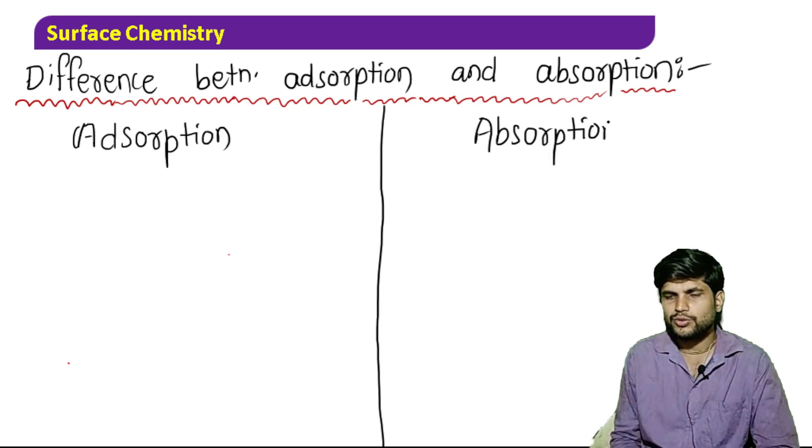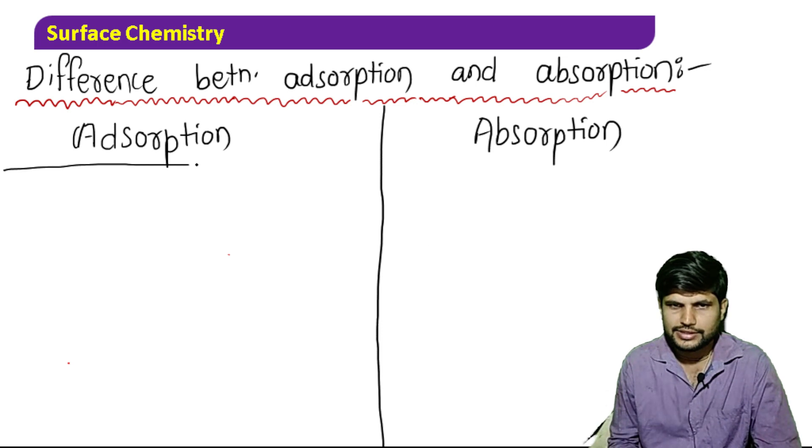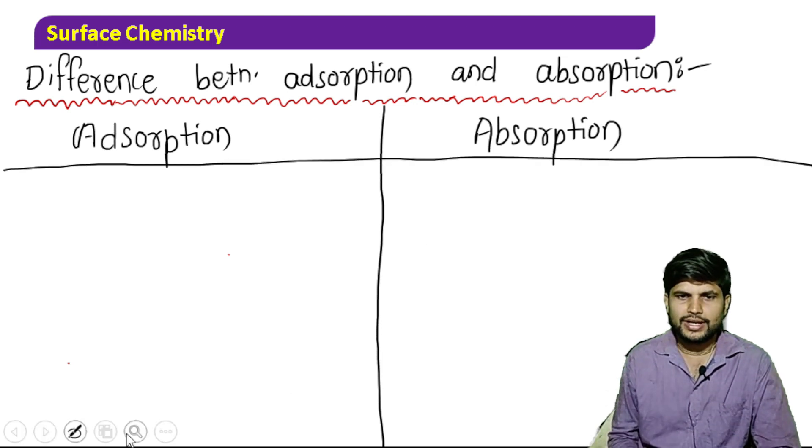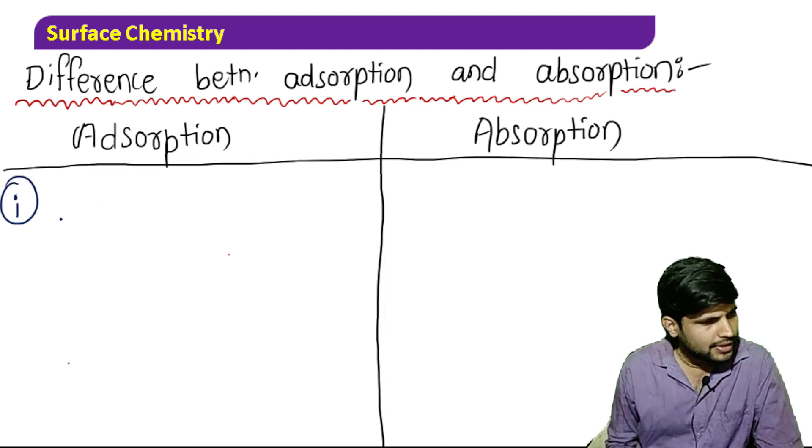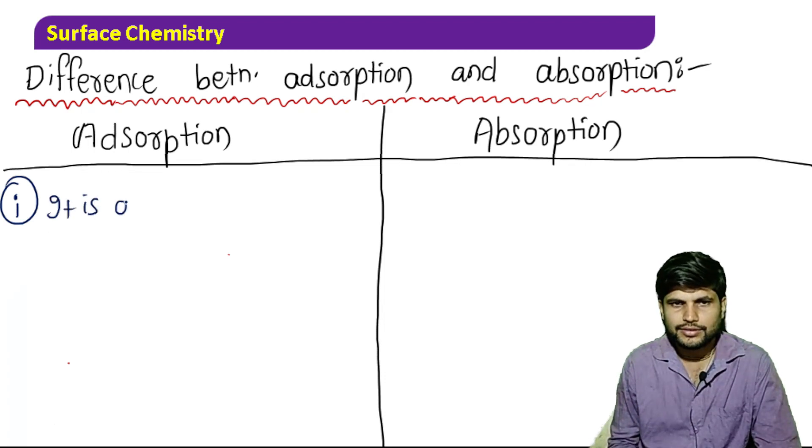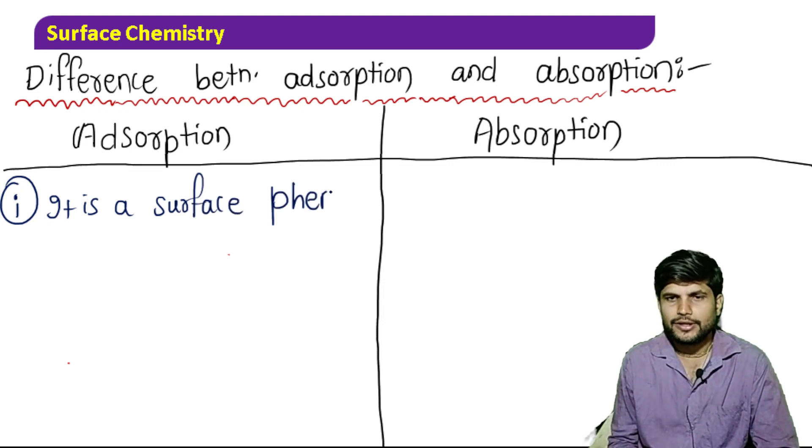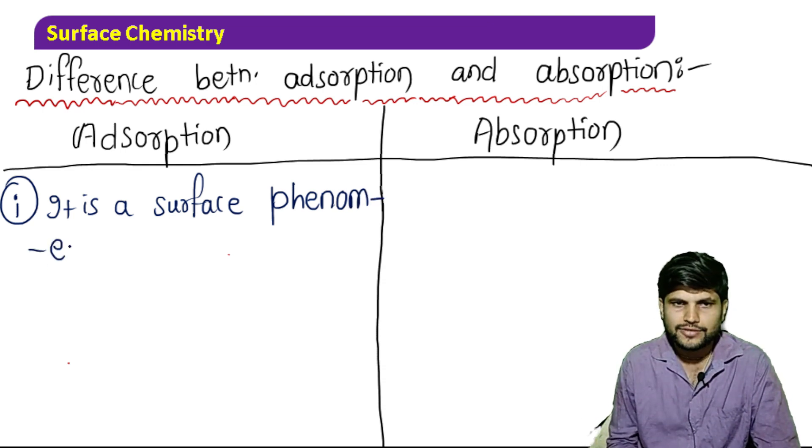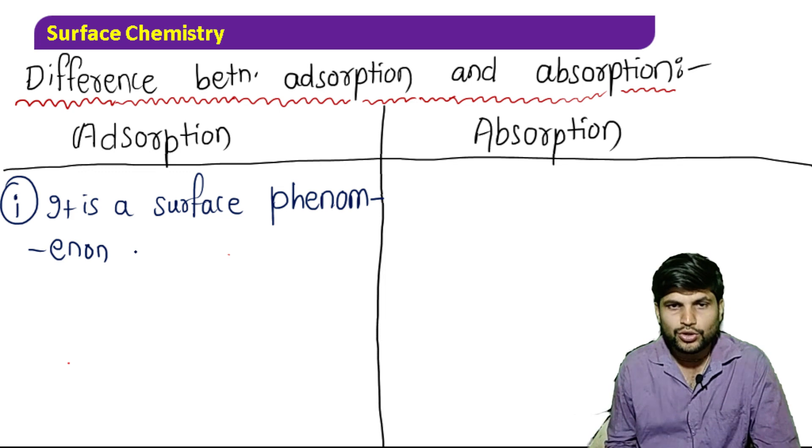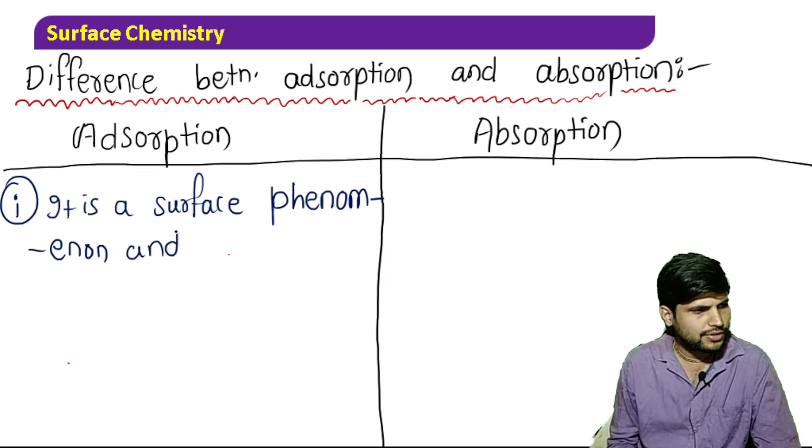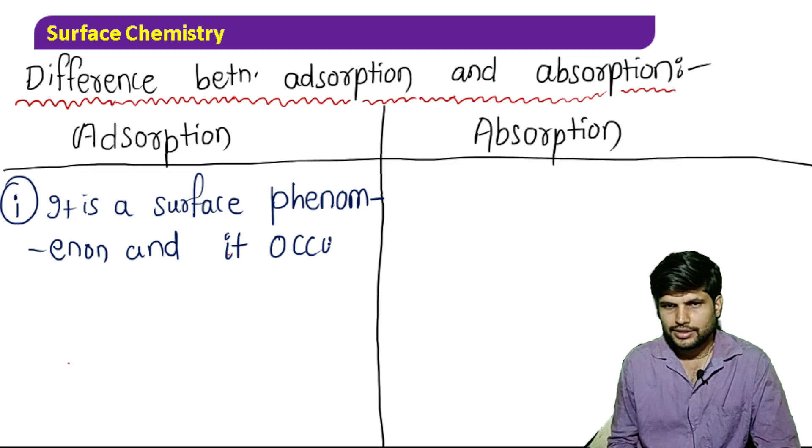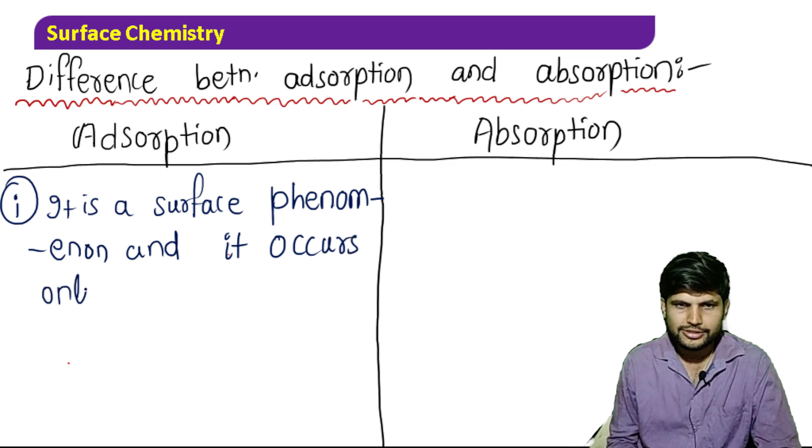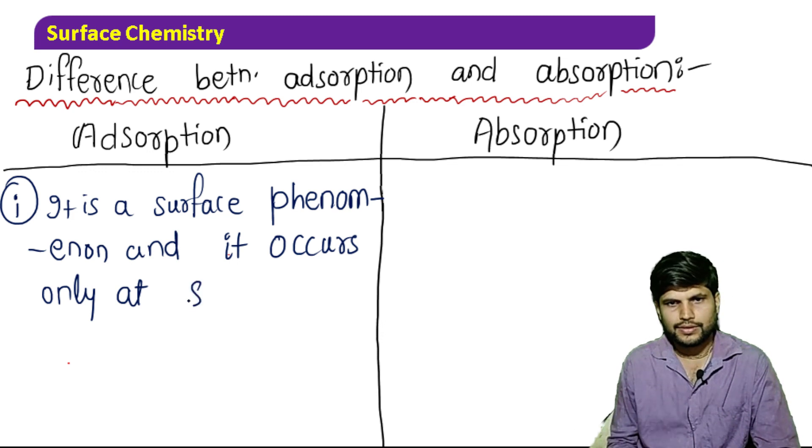I have already told adsorption is a surface phenomenon. Adsorption is a surface phenomenon, whereas absorption is a bulk phenomenon. First let me write it. It is a surface phenomenon, and it occurs only at surface.